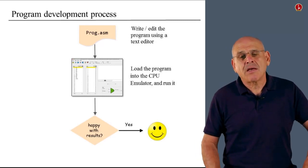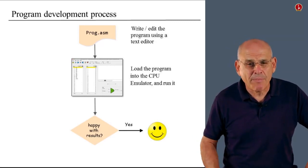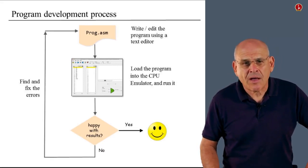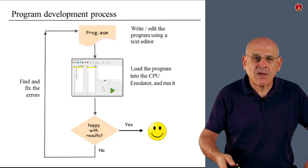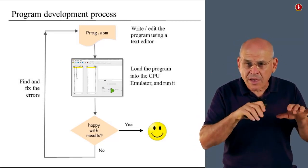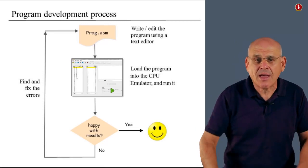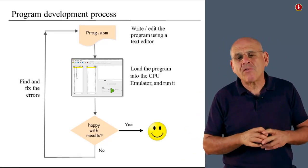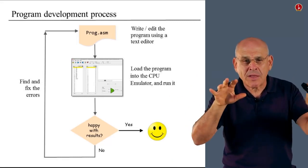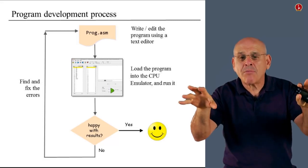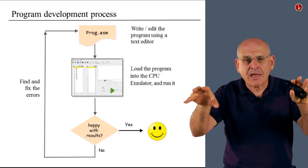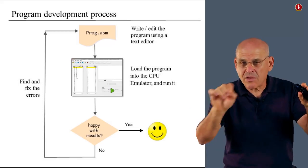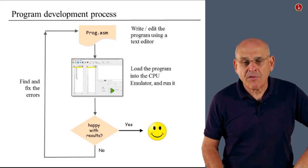You look for errors and you fix the errors. And you fix them by going back into the text editor, working in the editor, saving the program again, reloading it into the CPU emulator and so on. So it's quite convenient to have two windows opened on your screen at the same time. The text editor here, CPU emulator there. And you can easily move between the two. But don't forget to load your updated program after you fix it.